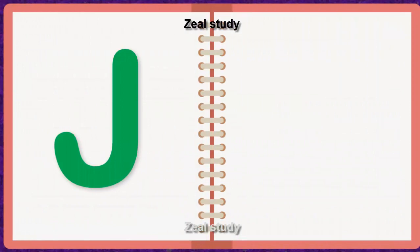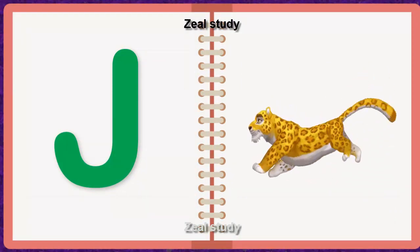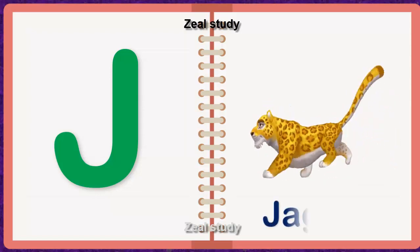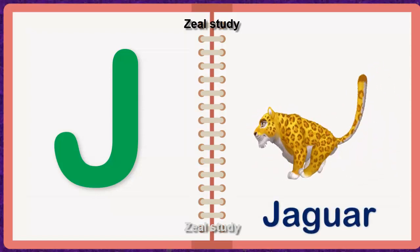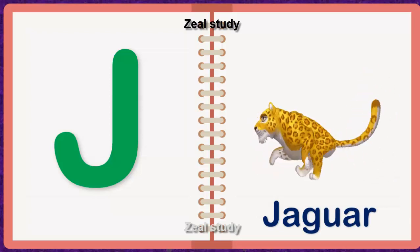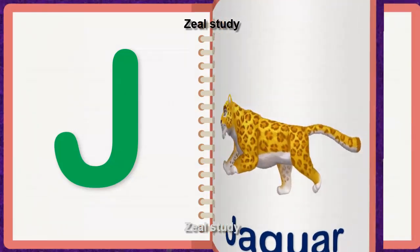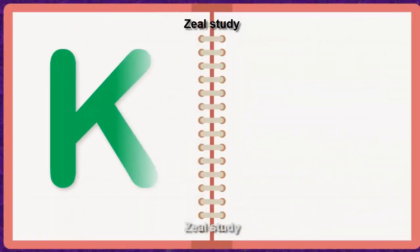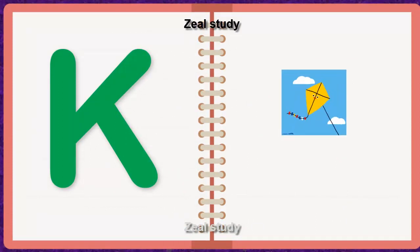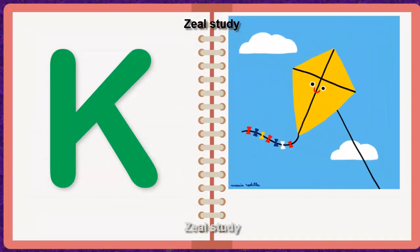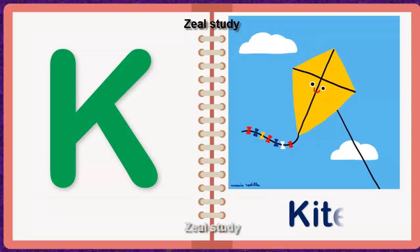I, C, E. Ice. J for Jaguar. J, A, G, U, A, R. Jaguar. K for Kite. K, I, T, E. Kite.